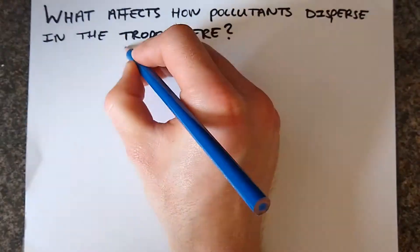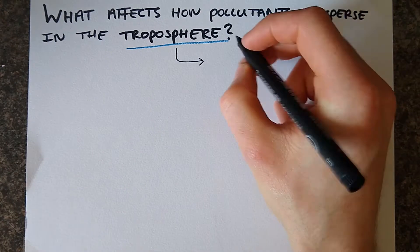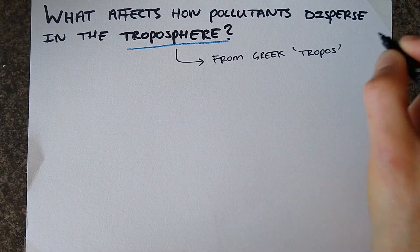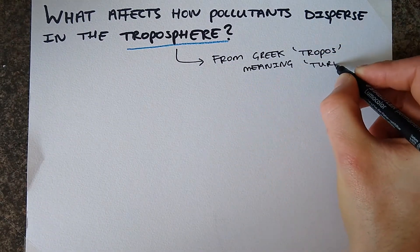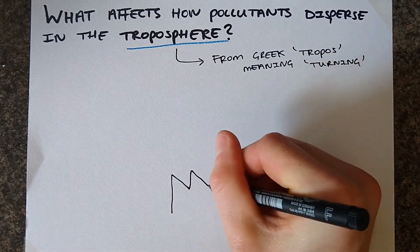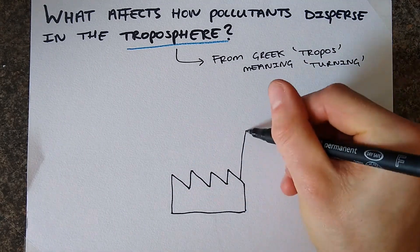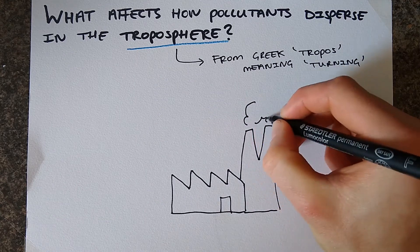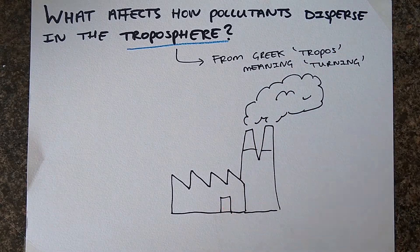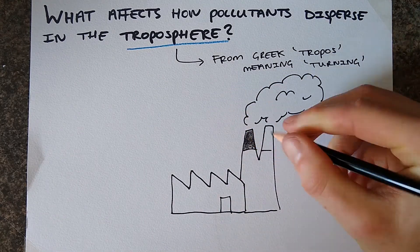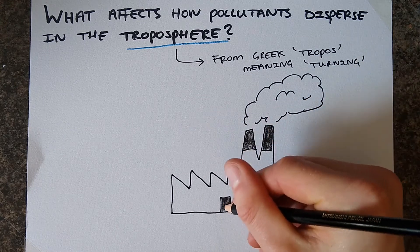The troposphere is where most weather phenomena occur and is actually why it's called the troposphere, as tropos is Greek for turning. If we quickly imagine some industrial processes as a source of pollutant emissions, we can label factors that would affect how the pollutants generated from this process might disperse in the troposphere.